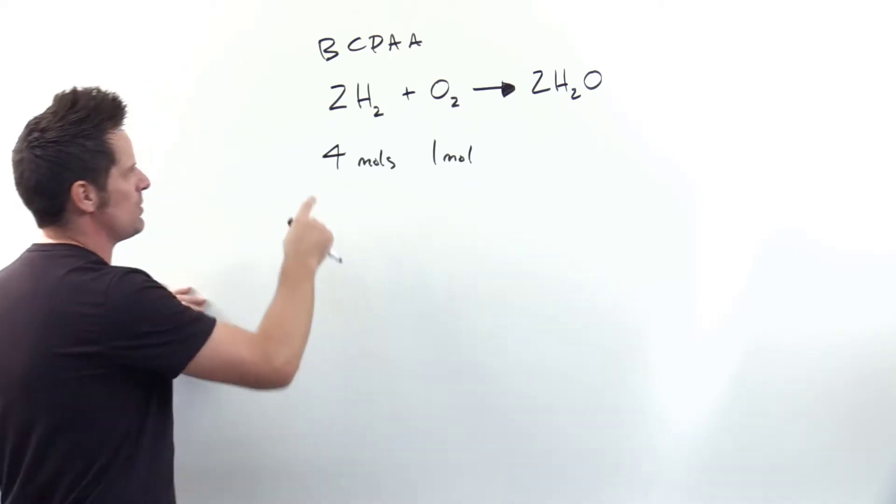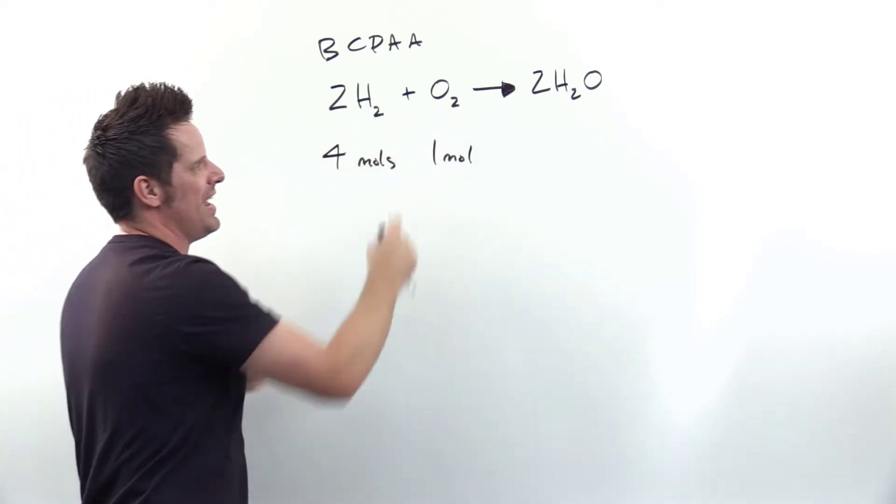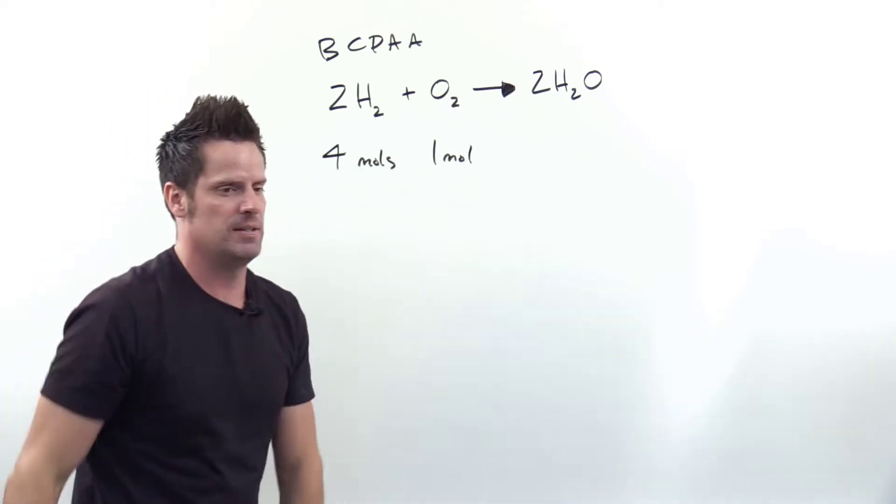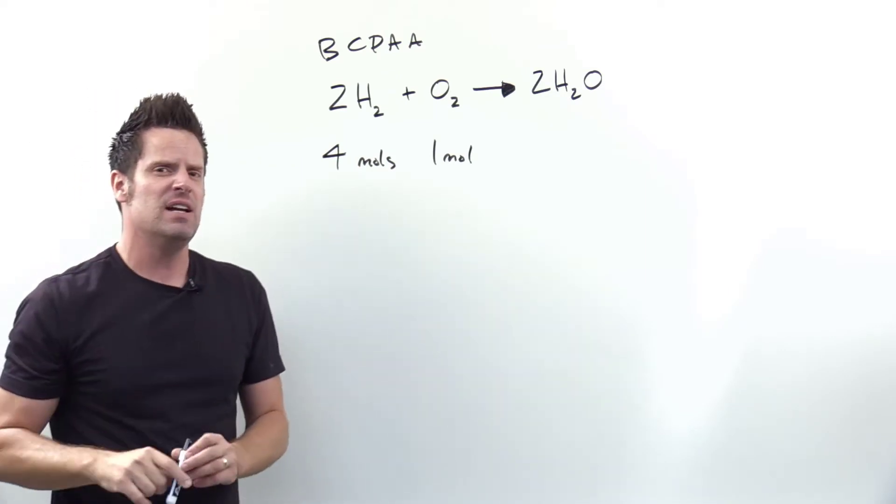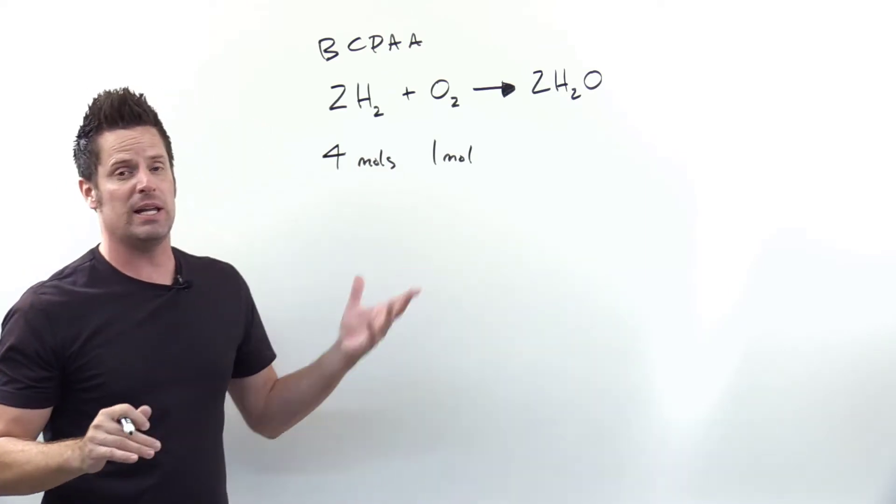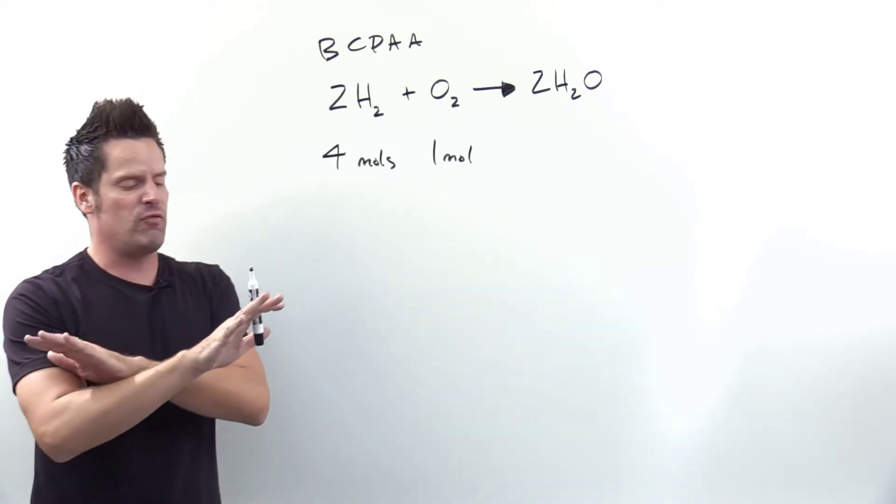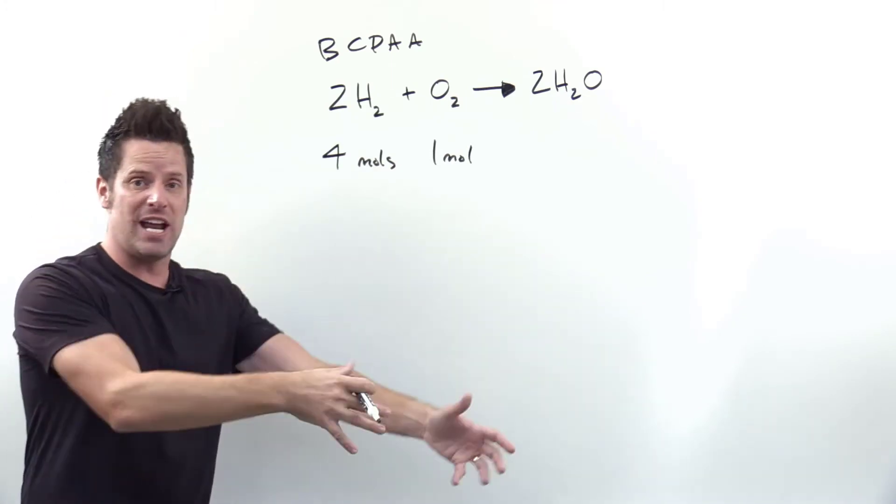And that's what this question asks. We throw in four moles of this, one mole of that, and ask which one runs out first. In other words, which one is the limiting reactant? Now this equation and the amounts are simple enough that you could probably do this just by eyeballing it. Nevertheless, I'm going to take you through the full BICPA process so that you can understand how to do it.